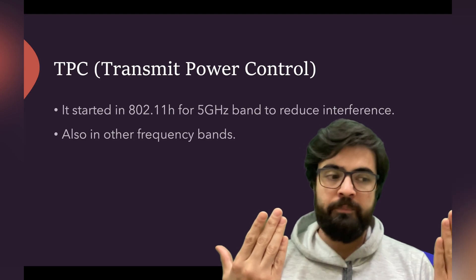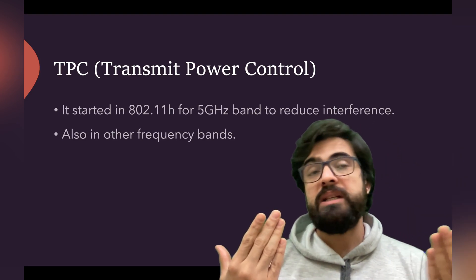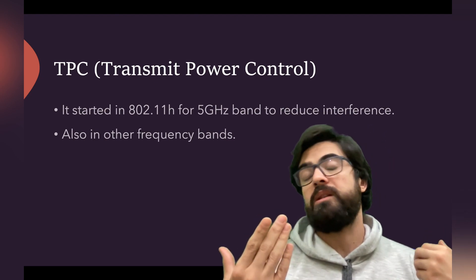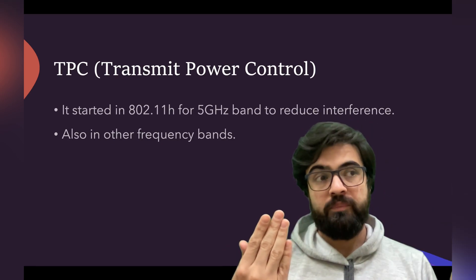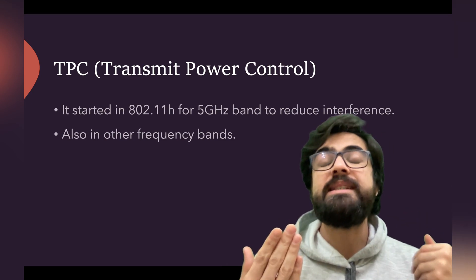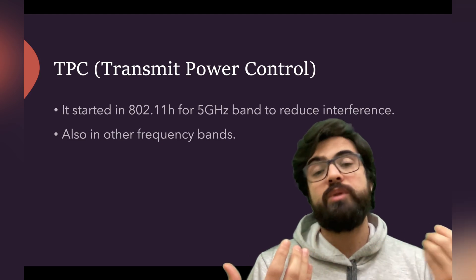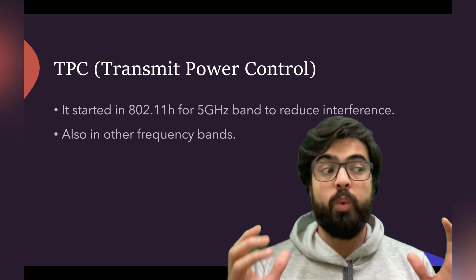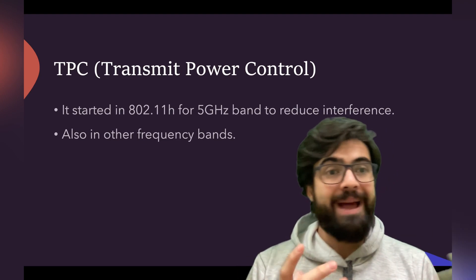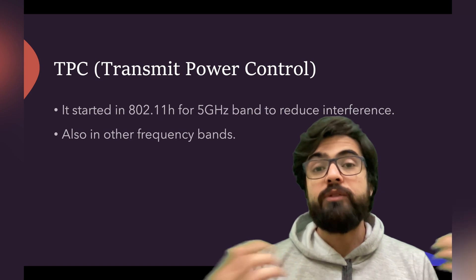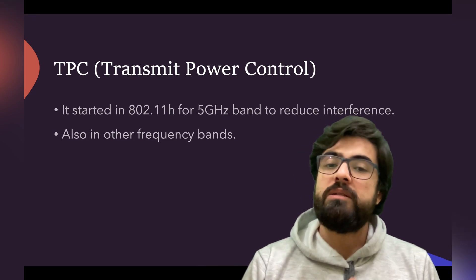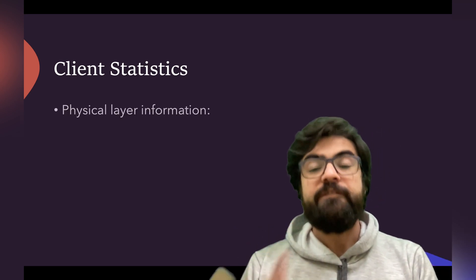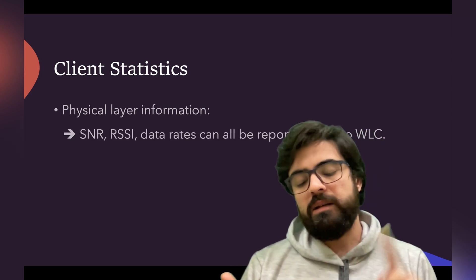For example, the WLC or AP may determine that minus 50 dBm is an acceptable received signal level for a user device. As the distance between the user and the AP decreases, the received signal level increases. The AP will then decrease its transmit power to save energy and avoid unnecessary broadcast, as long as the user's signal quality remains acceptable. This is Transmit Power Control in action.